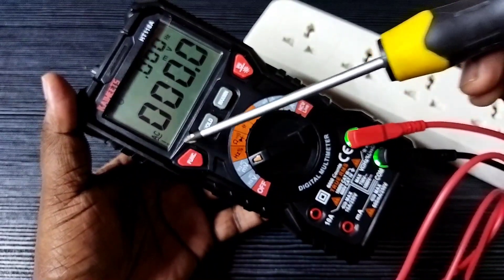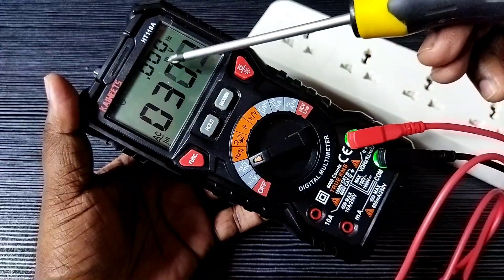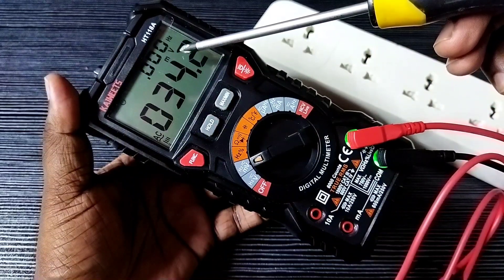Here we can see function button, just press that, now we can see AC. Now we can measure AC voltage.